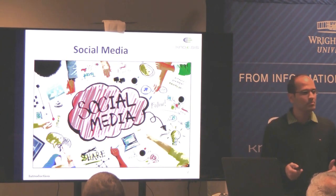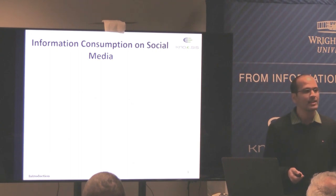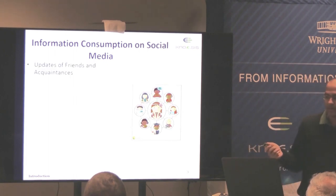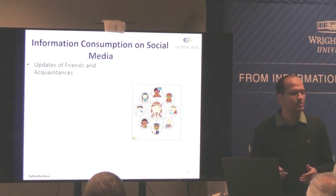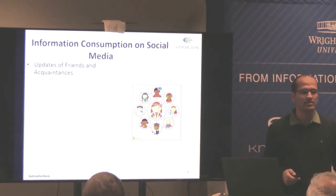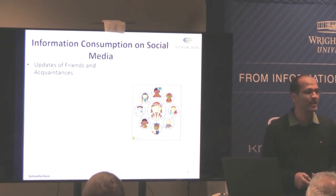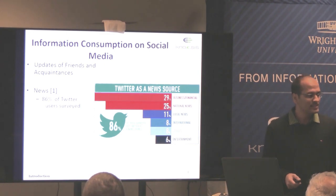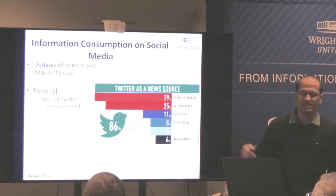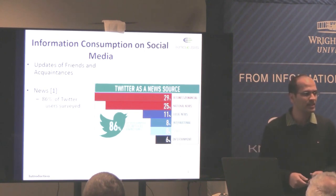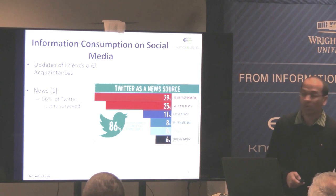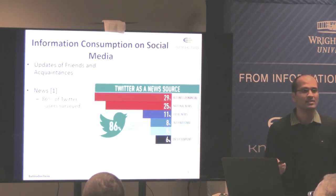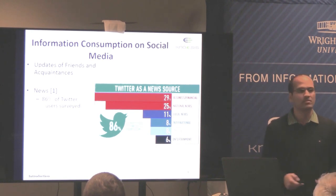Being a prominent medium of generating information, social media is also a place where a lot of us consume a lot of information. One reason we consume information is to keep track of our friends and policies — to know what's happening in our network in real time. Another reason: a recent survey said around 86% of Twitter users who participated said they follow news on Twitter. So it also acts as a medium to share news.